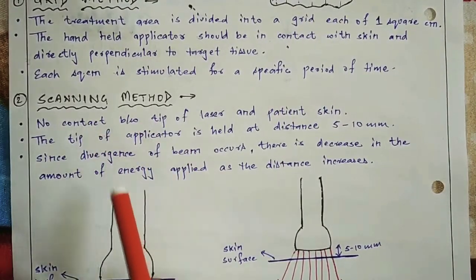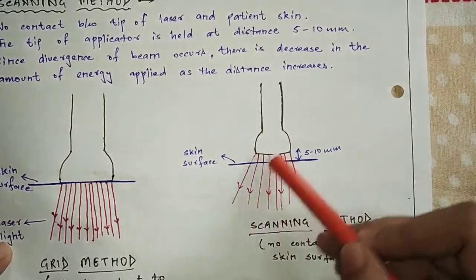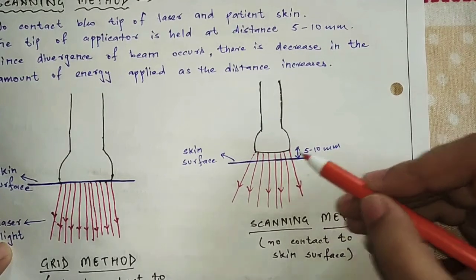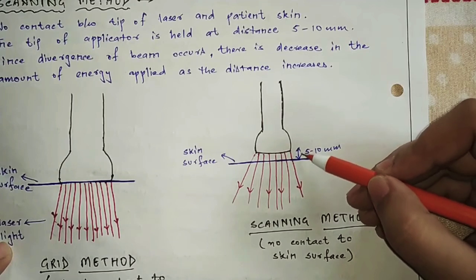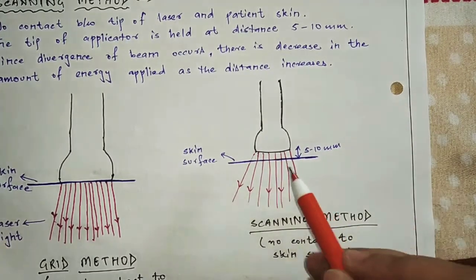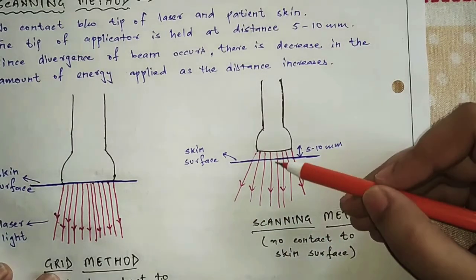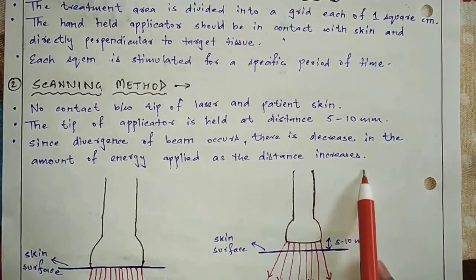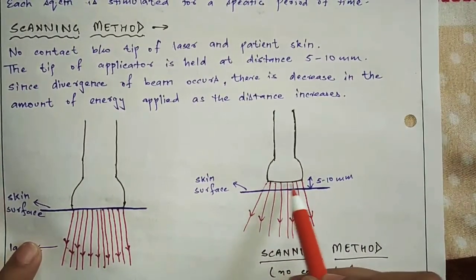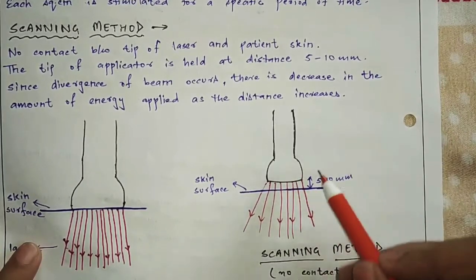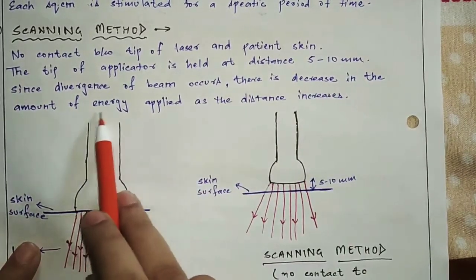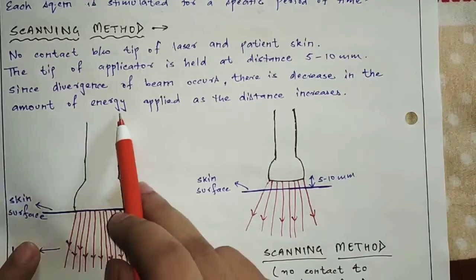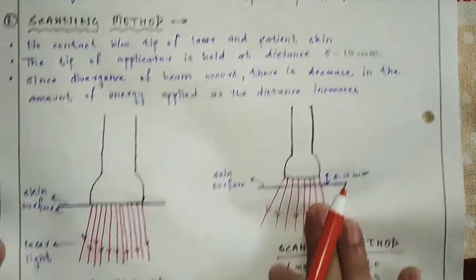In the scanning method, the hand applicator laser is not in direct contact with the skin — there is a distance of 5 to 10 millimeters between them. Because of this distance, there is divergence in the beam. As the distance increases, the beam diverges more and the energy density decreases. So in grid method we use direct contact to the skin, and in scanning method there is no contact with the skin.